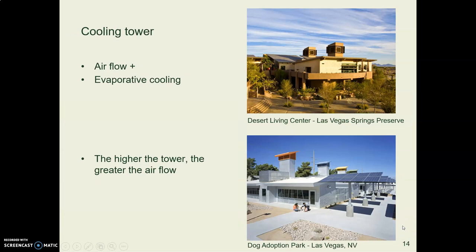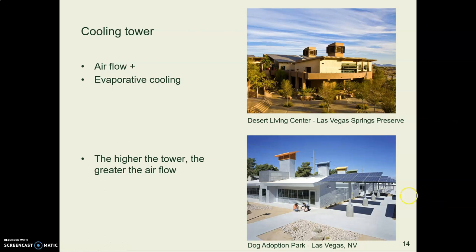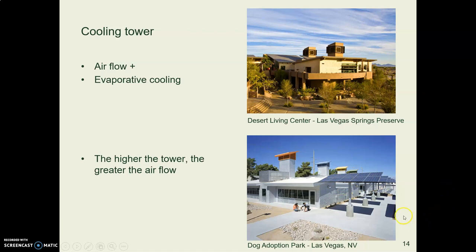Here are two examples in Las Vegas. The one at the top is the Desert Living Center; the one at the bottom is a facility for dogs being adopted. Each of those colored towers has a wetted pad inside that brings cool air down into the space where the dogs live. They also have solar panels providing power to the facility.